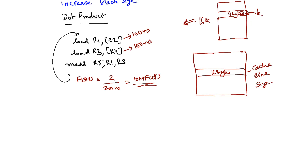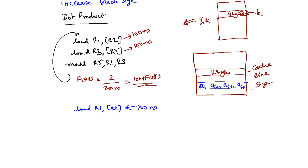Now let us see how this changes with 16-byte cache lines. When I do load R1, what comes into the cache? I am loading a_i — this takes 100 nanoseconds — but what comes into the cache is not just a_i, but a_i+1, a_i+2, and a_i+3 as well. Similarly, when I execute load R3, that also takes 100 nanoseconds but loads b_i, b_i+1, b_i+2, and b_i+3 into the cache. So this first pair of loads takes about 200 nanoseconds.